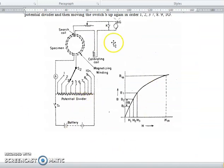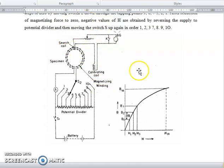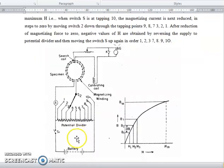This is how the BH curve is plotted. And this includes the potential divider, magnetizing winding, calibrating coil, search coil and specimen. So by using this we can calibrate the BH curve.